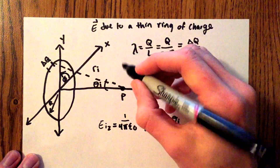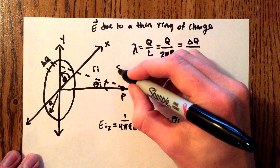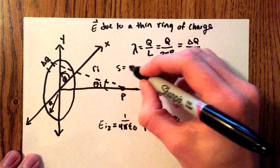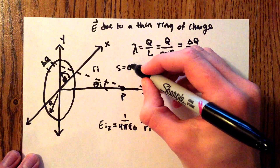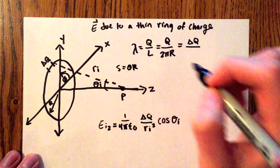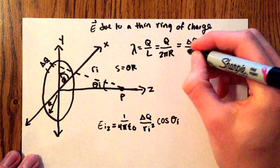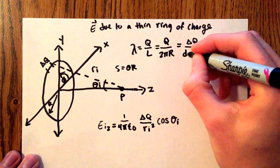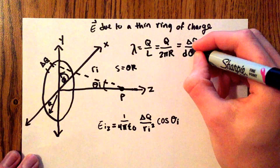And in the case of our differential charge, we'll have delta q over the arc length s, which is equal to the angle times r, so in this instance that'll be delta phi times r.